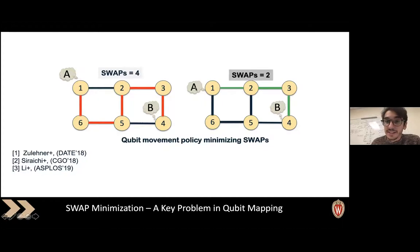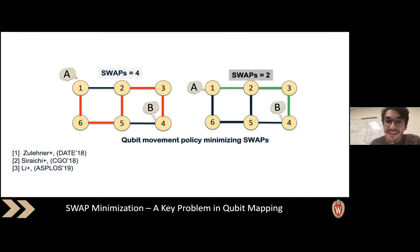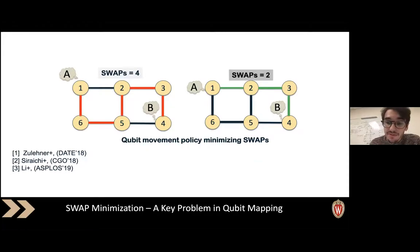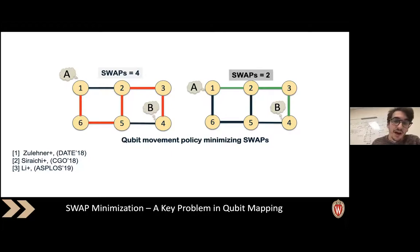For example, if you'd like to connect A and B, the optimal path is the shortest-distance path along the green line and not along the red. But if you have a higher-dimensional graph — say you want to implement something with all-to-all connectivity — then you need to route many qubits and figure out that process. This is the problem of limited connectivity, and it comes down to a minimization problem where our cost function is the number of swaps.